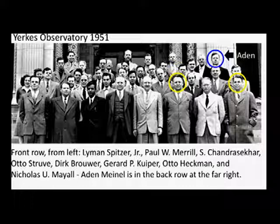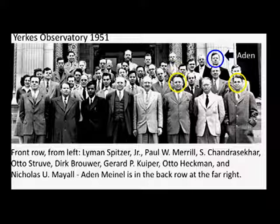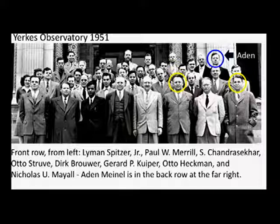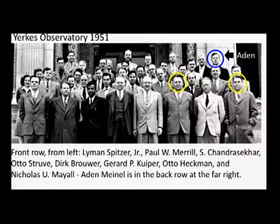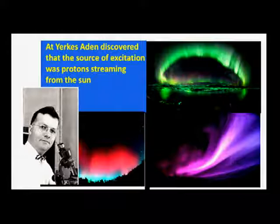This is the Yerkes Observatory in 1951. In the front row we have famous astronomers: Lyman Spitzer, Paul Merrill, Subrahmanyan Chandrasekhar, and Otto Struve. Gerard Kuiper has a yellow circle around him, Nick Mayall has a yellow circle, and Aidan is in the back with blue. These are the three people that contributed significantly to University of Arizona's academic programs: Aidan, Kuiper, and Mayall. At Yerkes, Aidan discovered that the source of excitation providing the aurora glow was protons streaming from the sun.